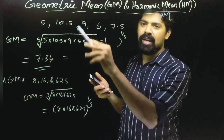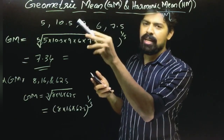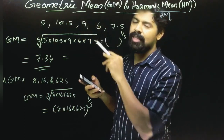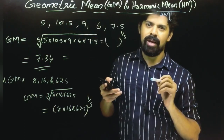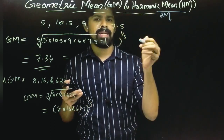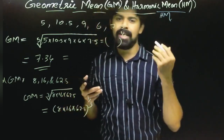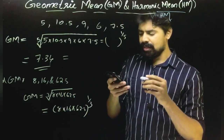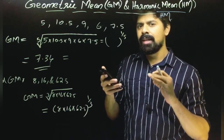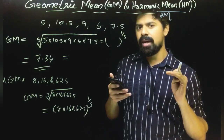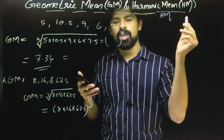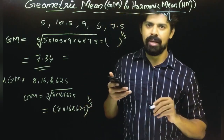To summarize when to use each mean: percentage of increase and rate of change use geometric mean. Speed and average use harmonic mean. That is why in the cycle race example, we say harmonic mean.